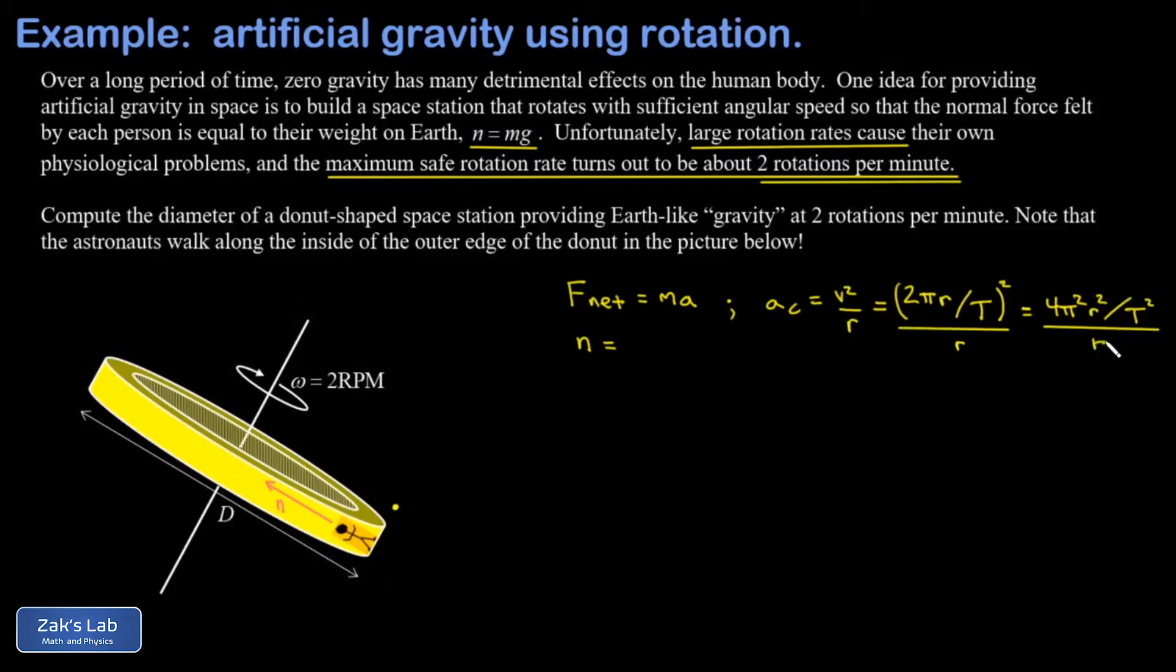We still have an R in the denominator, so one of those R's is going to cancel. This gives us a useful alternative for the formula for centripetal acceleration: 4π²r over T².